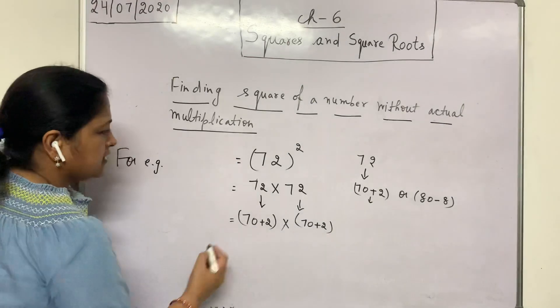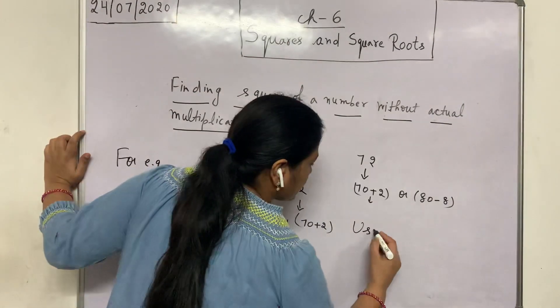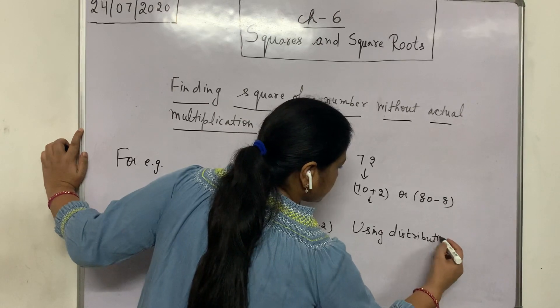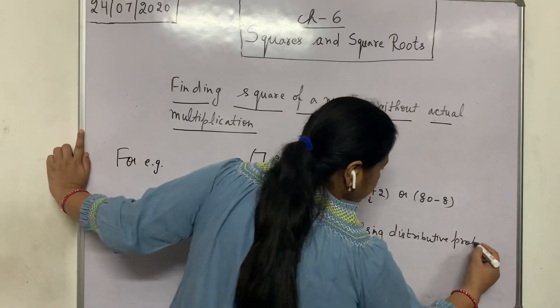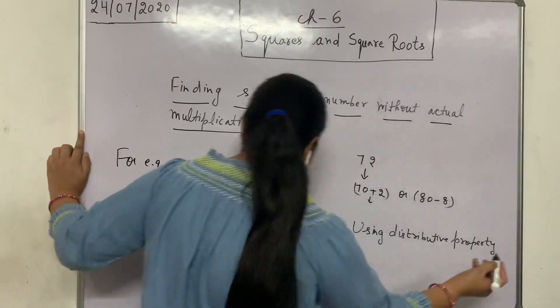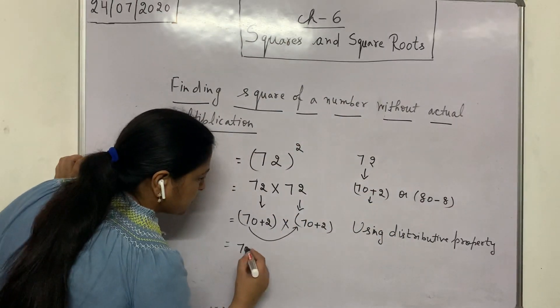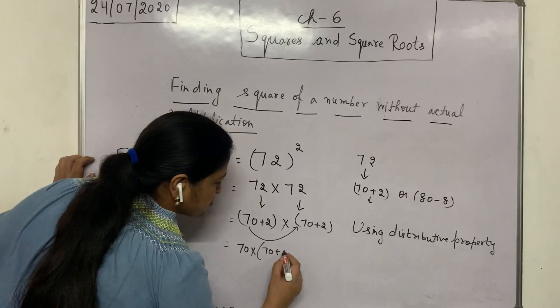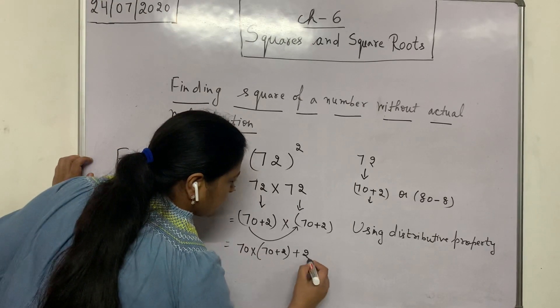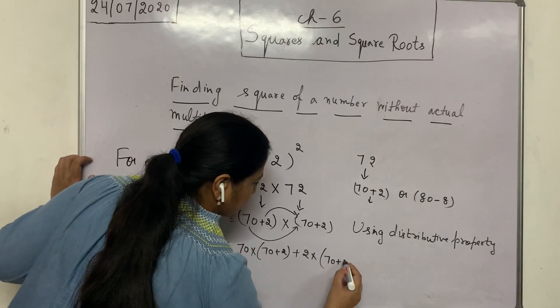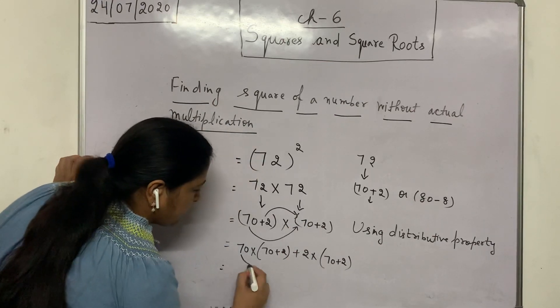After that, using distributive property, expanding brackets, we will solve this. 70 into this full bracket, 70 plus 2, and then plus 2 into this full bracket. Again, applying distributive.